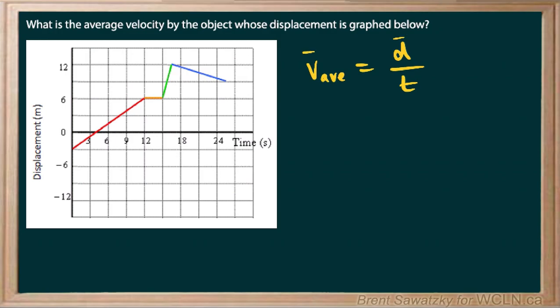And we can mark them as vectors if we wish. And the total displacement, remember, is where we ended up, as shown on the graph here, versus where we started. So where we ended up is 9 meters from the zero point, and where we started was negative 3.